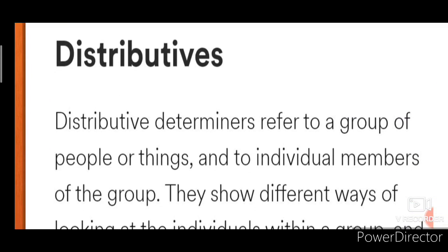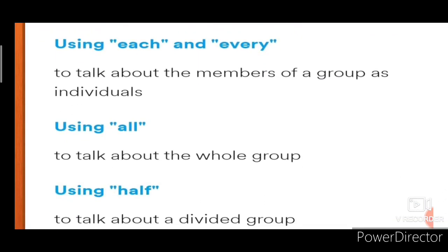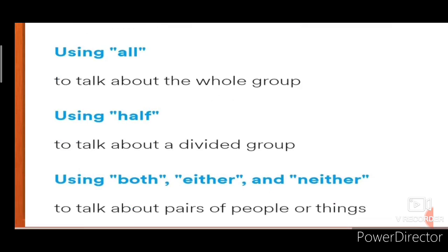Distributive determiners refer to a group of people or things. Words like each, every, all, half, both, either are distributive determiners. The only difference is, when used as determiners, we write a noun after these words. In the case of distributive pronouns, we don't write a noun — we include a verb instead.